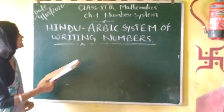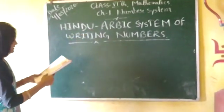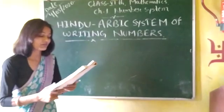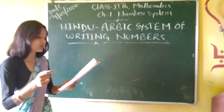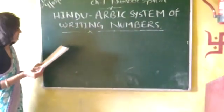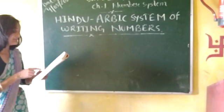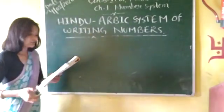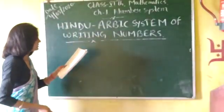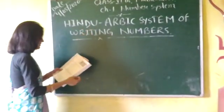Children, now you will be studying about the writing of numbers by the Hindu-Arabic system. In this Hindu-Arabic system, we use 10 symbols, 0 to 9, called digits, to represent any number. A group of digits denoting a number is called a numeral. Now I want to show the children how to denote any number in the Hindu-Arabic system.